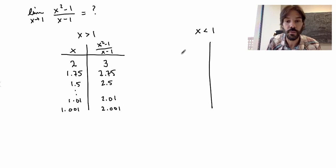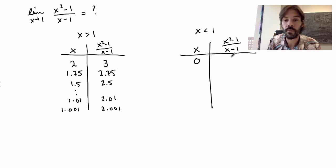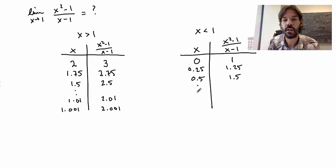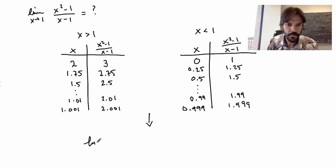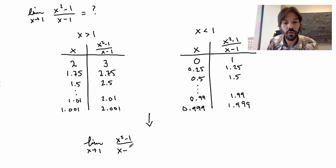Now let's see if the same is true from the other side — that's quite important because if it's not, the limit is not well defined. Starting with x = 0, the function equals 1. Taking x closer to 1: x = 0.75 gives about 1.75, x = 0.5 gives 1.5. As I get closer, x = 0.99 gives about 1.99, and x = 0.999 gives 1.999. So from this side it also approaches the same number, which is 2.